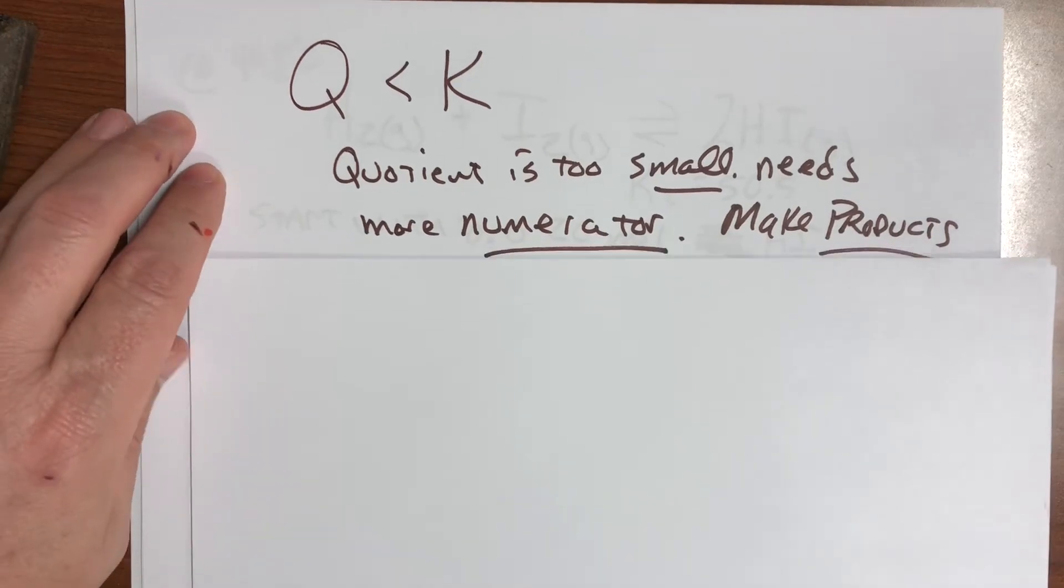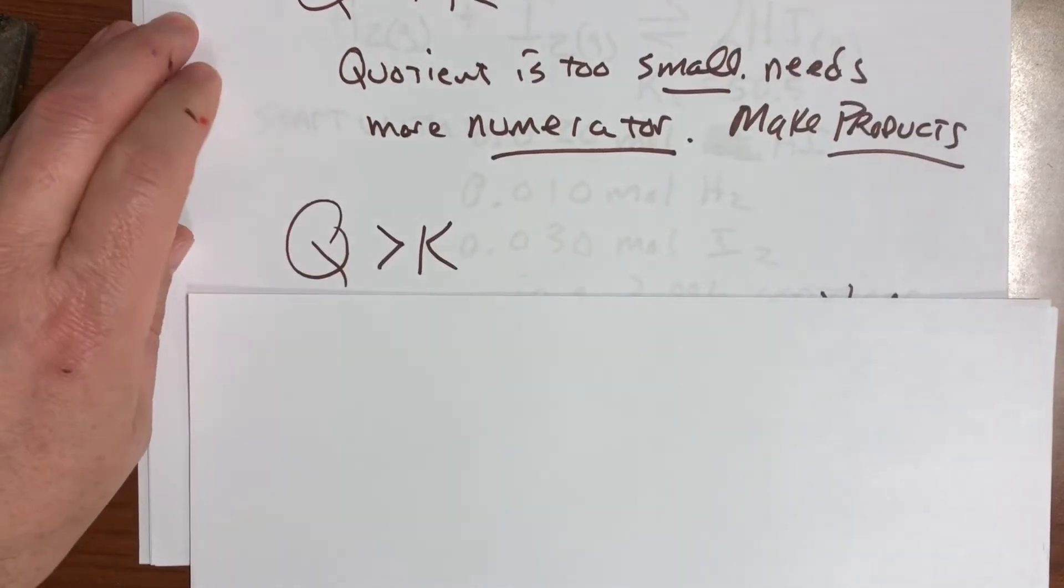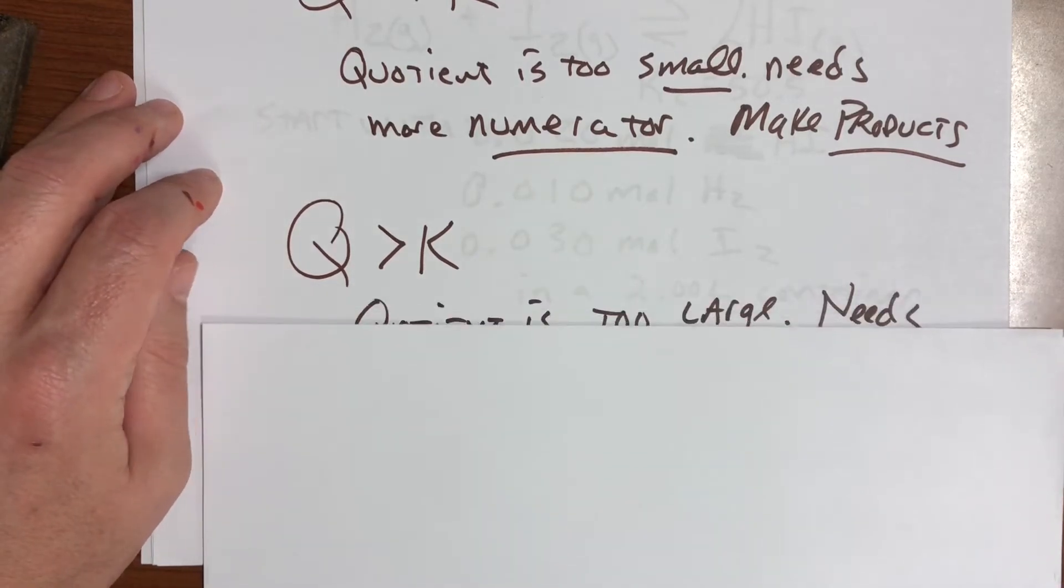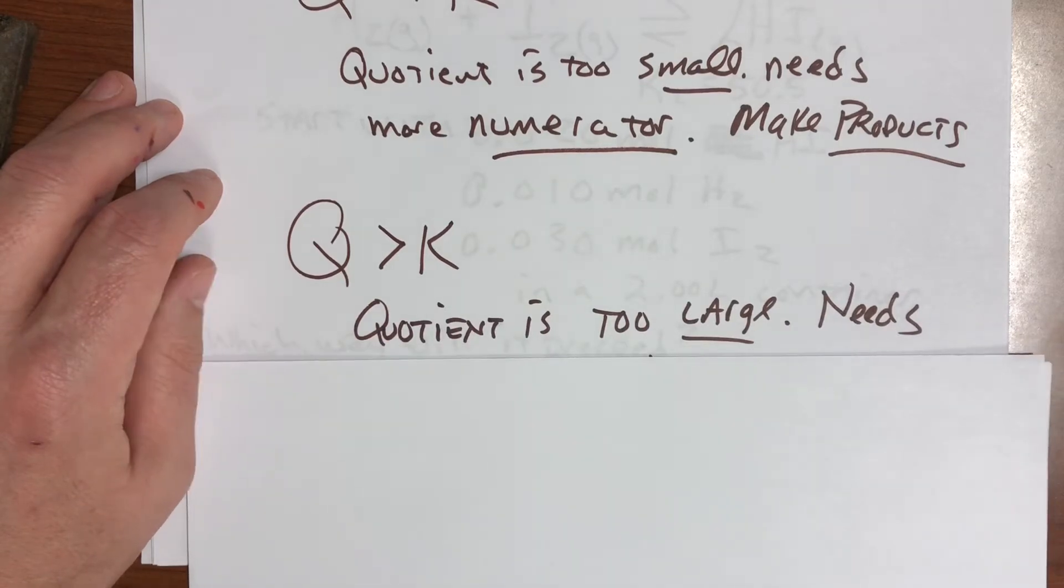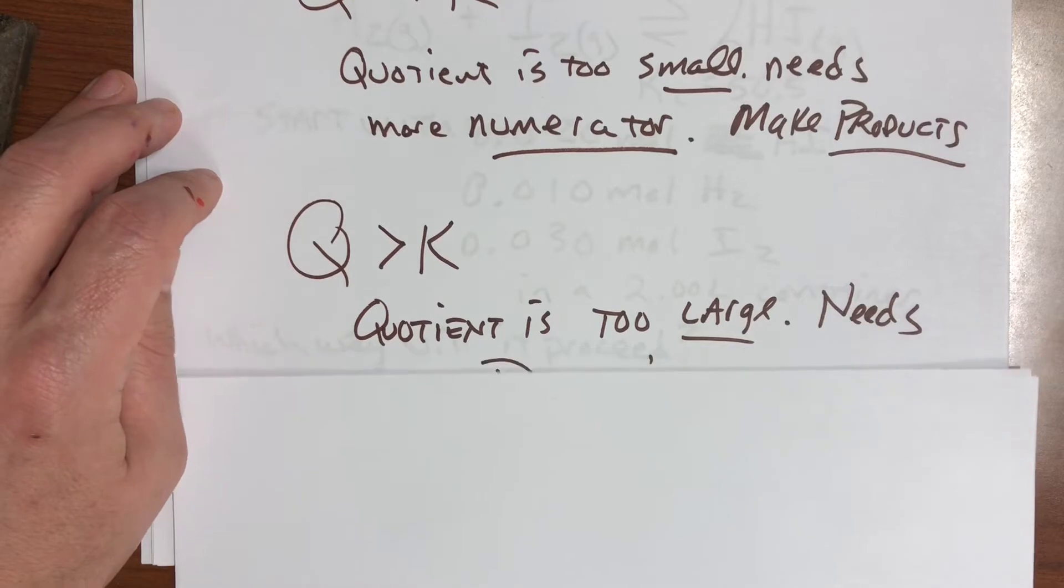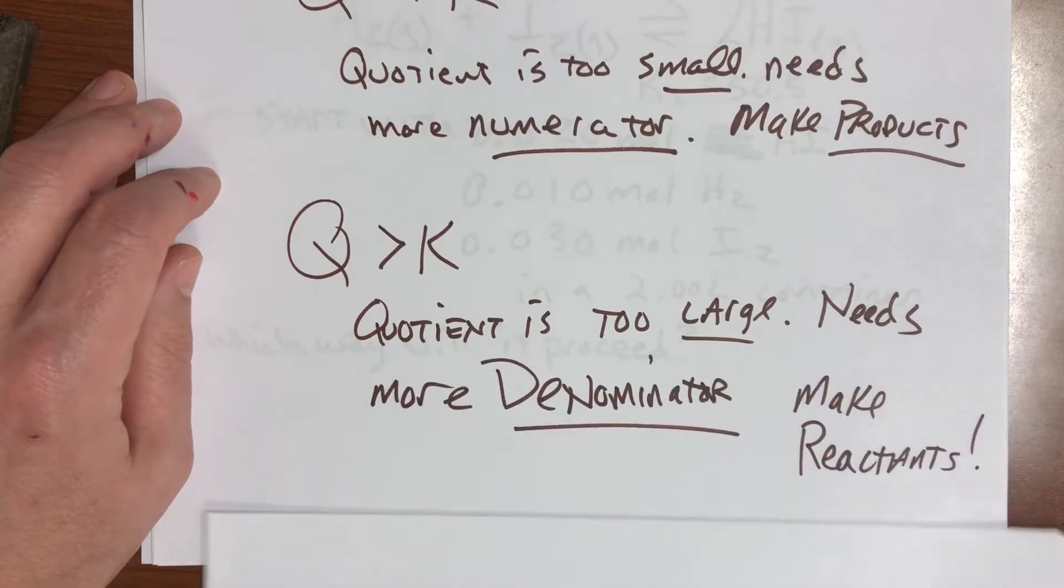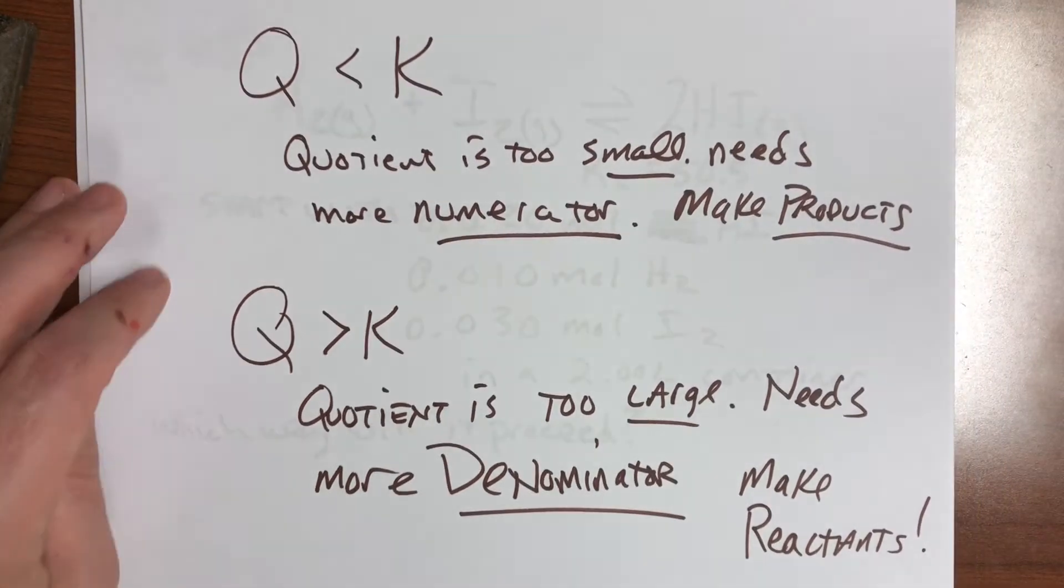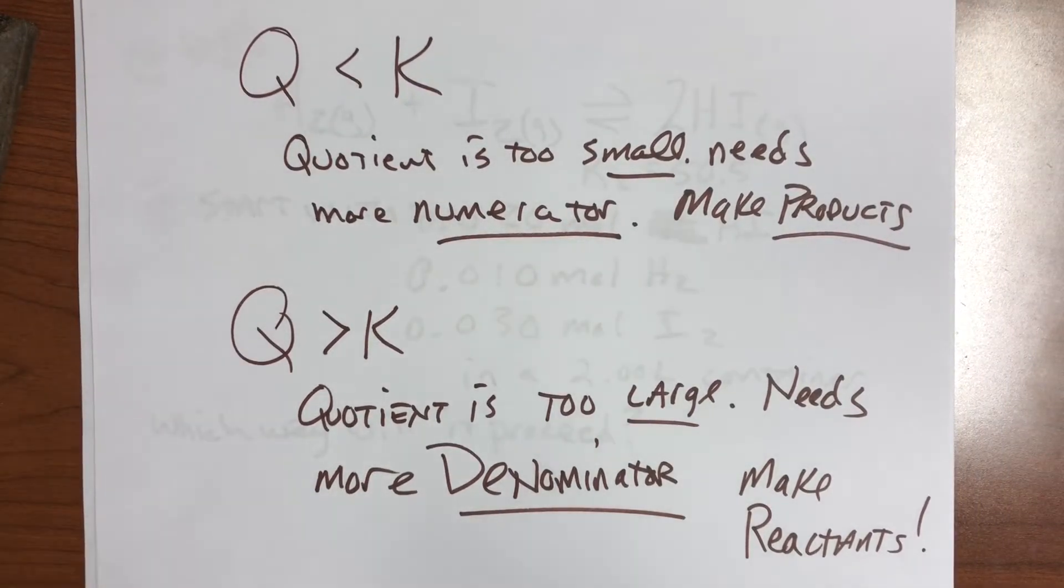And then conversely, if Q is bigger than K, if you plug in all those numbers and you get a number bigger than the K value, then you know that the quotient is too large. So you need a larger denominator. So you need more reactants. So that's going to run to the left. It's going to favor the reactant side.